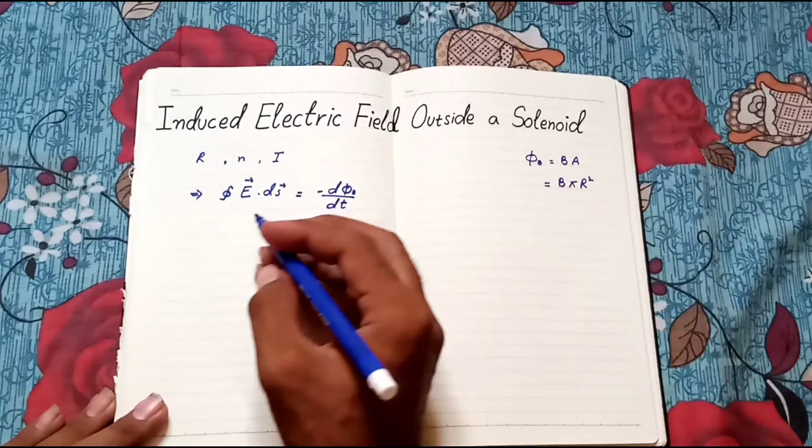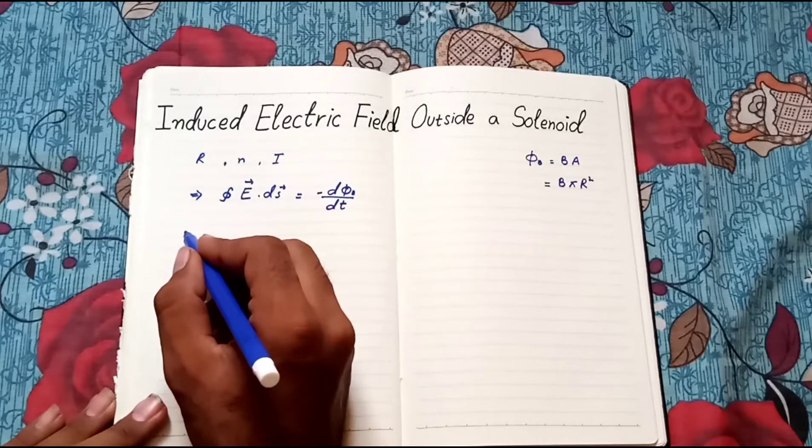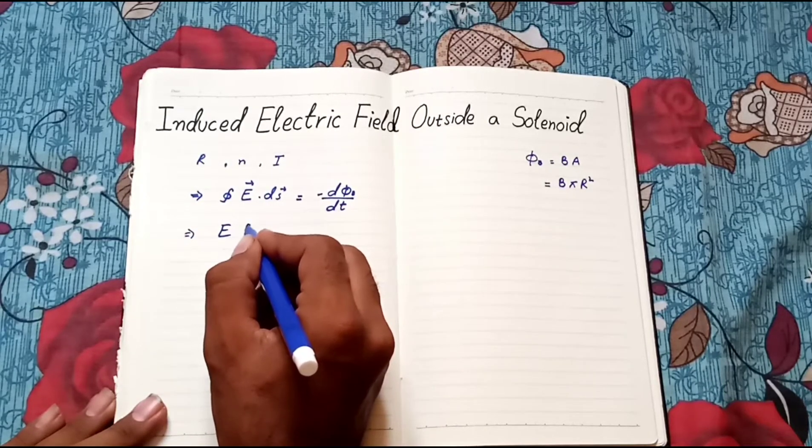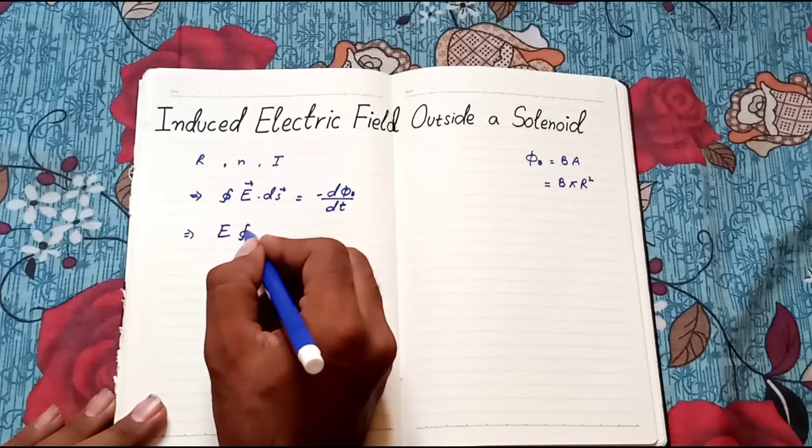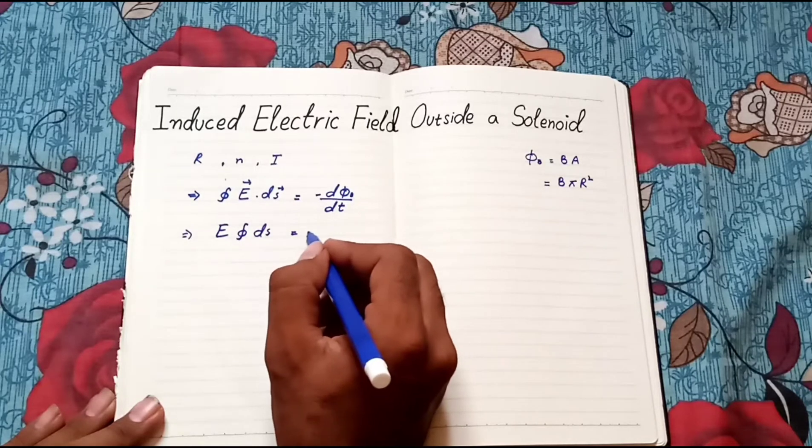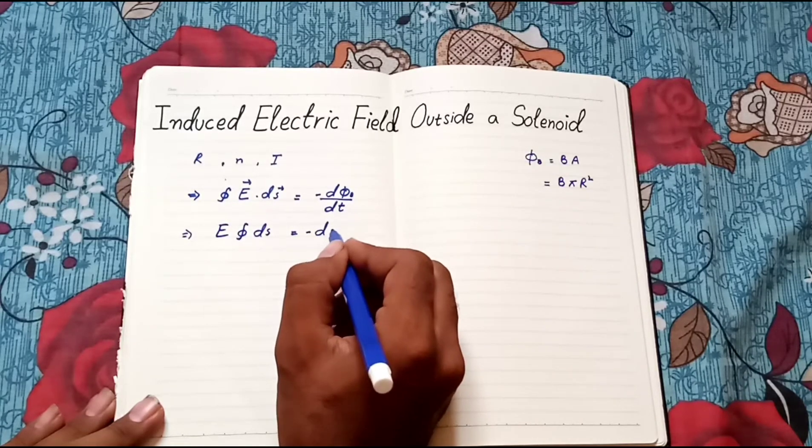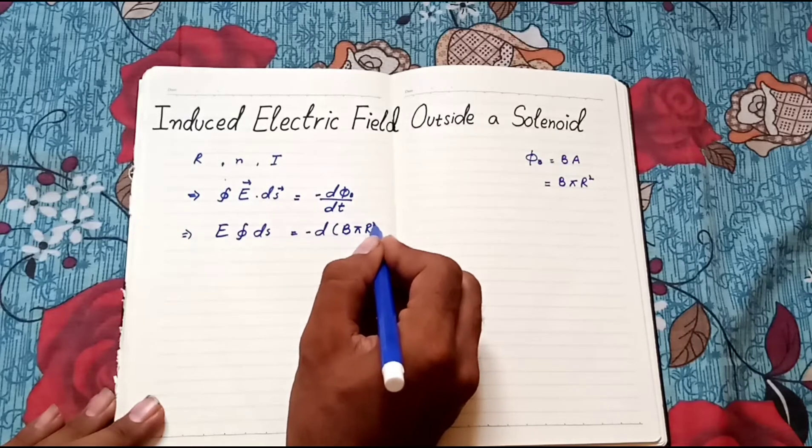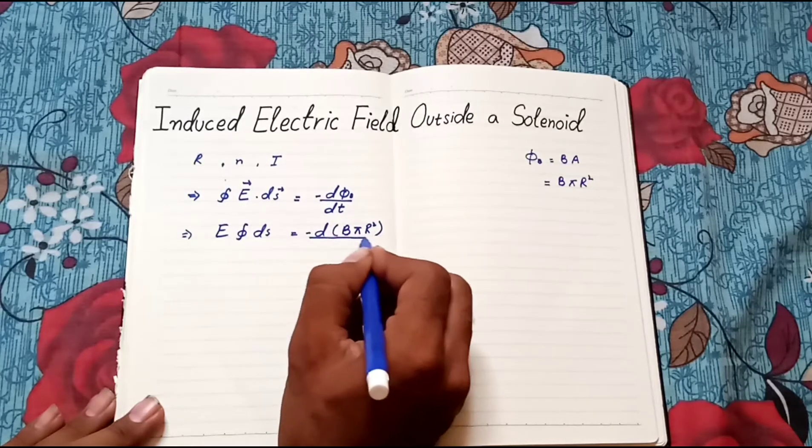Thus, our equation becomes closed integral E.ds equals minus d into d pi r squared upon dt.